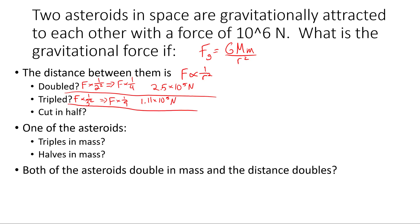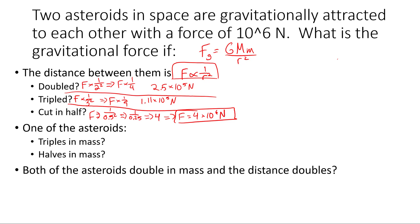If we cut the distance in half, we're bringing the asteroids closer together, so the force is going to increase. Since we're decreasing the distance by a factor of 2, we increase the force by a factor of 2 squared. The force changes by 1 over 0.5 squared, which is 1 over 0.25, which equals 4. So our force is going to be 4 times 10 to the 6 newtons — cut the distance in half, we get 4 times the force.